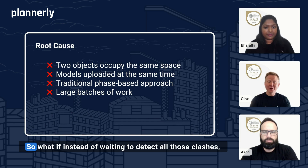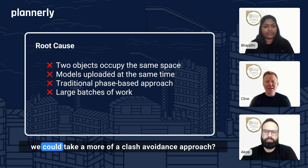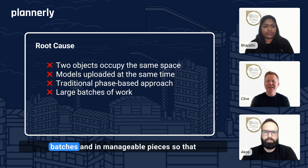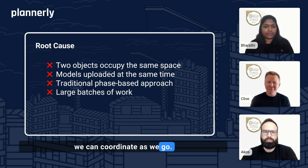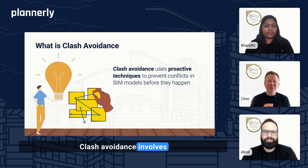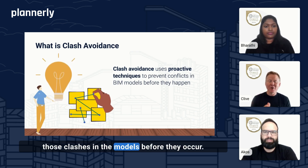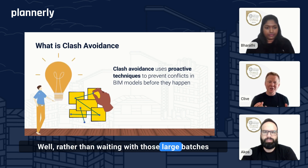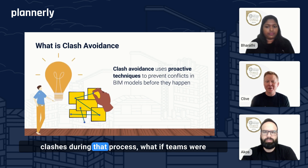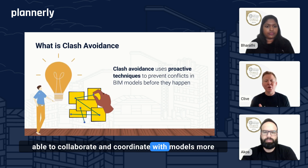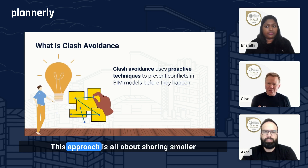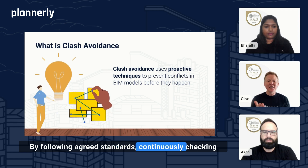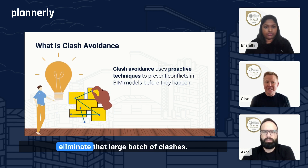So what if, instead of waiting to detect all those clashes, we could take more of a clash avoidance approach? Working collaboratively, sharing information continuously in smaller batches and in manageable pieces so that we can coordinate as we go. Clash avoidance involves using a proactive approach to avoid those clashes in the models before they occur. Rather than waiting with large batches of models and identifying clashes during that process, teams can collaborate and coordinate with models more frequently and earlier in the workflow. This approach is all about sharing smaller updates more regularly, and by following agreed standards and continuously checking for possible conflicts, we're able to eliminate that large batch of clashes.